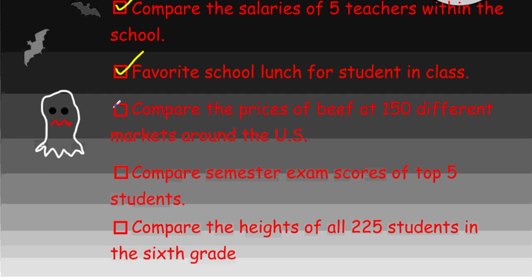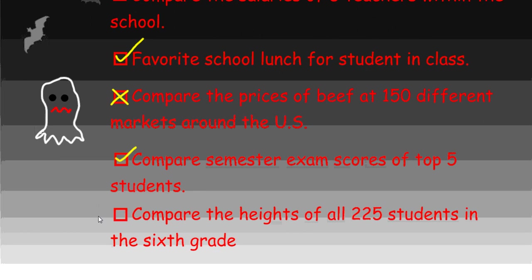Compare prices of beef at 150 different markets around the US - no, that would be a very difficult one to make a bar graph for. In a little bit, we're going to discuss that you could use a histogram to help show the frequencies of the different prices for beef at these different markets. How about compare semester exam scores for the top five students? Yes - again, five students you could easily put into a bar graph to compare them.